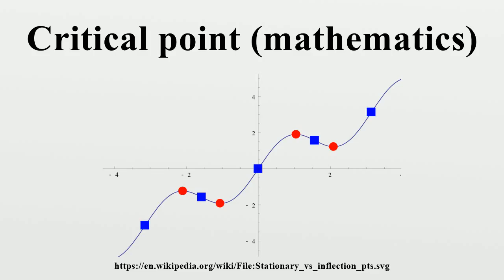A critical point or stationary point of a differentiable function of a single real variable f is a value x₀ in the domain of f where its derivative is zero. A critical value is the image under f of a critical point. These concepts may be visualized through the graph of f: at a critical point, the graph has a horizontal tangent and the derivative of the function is zero.